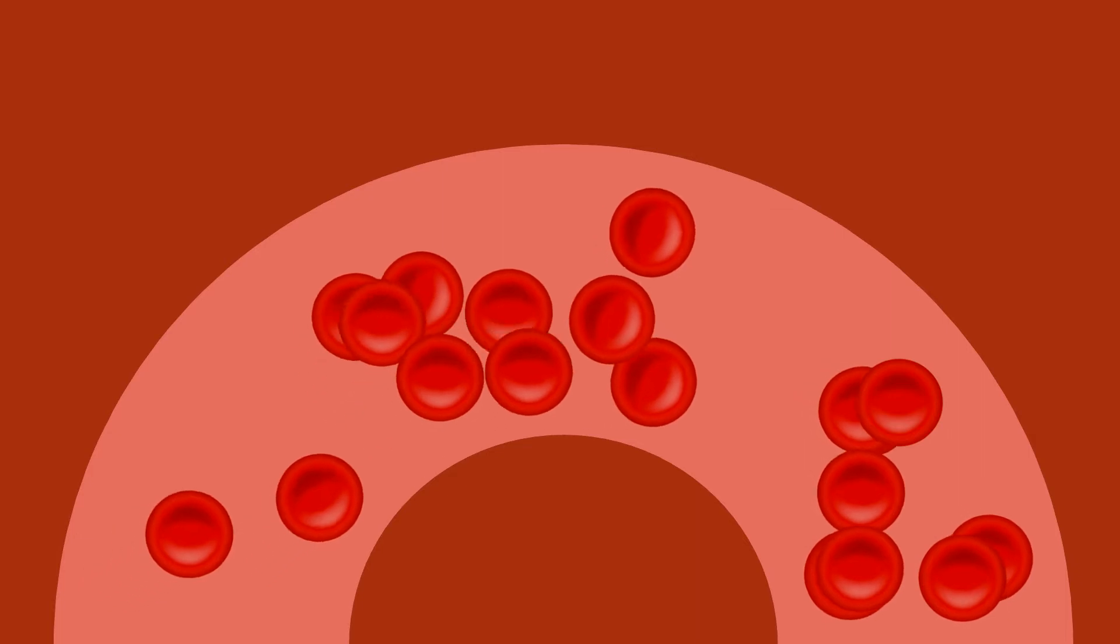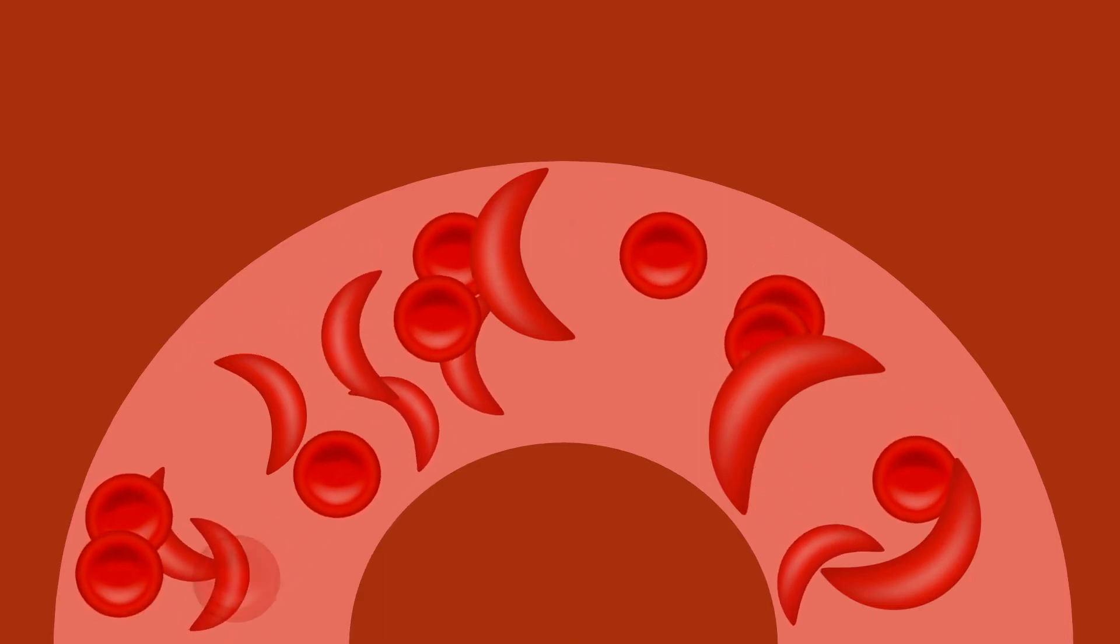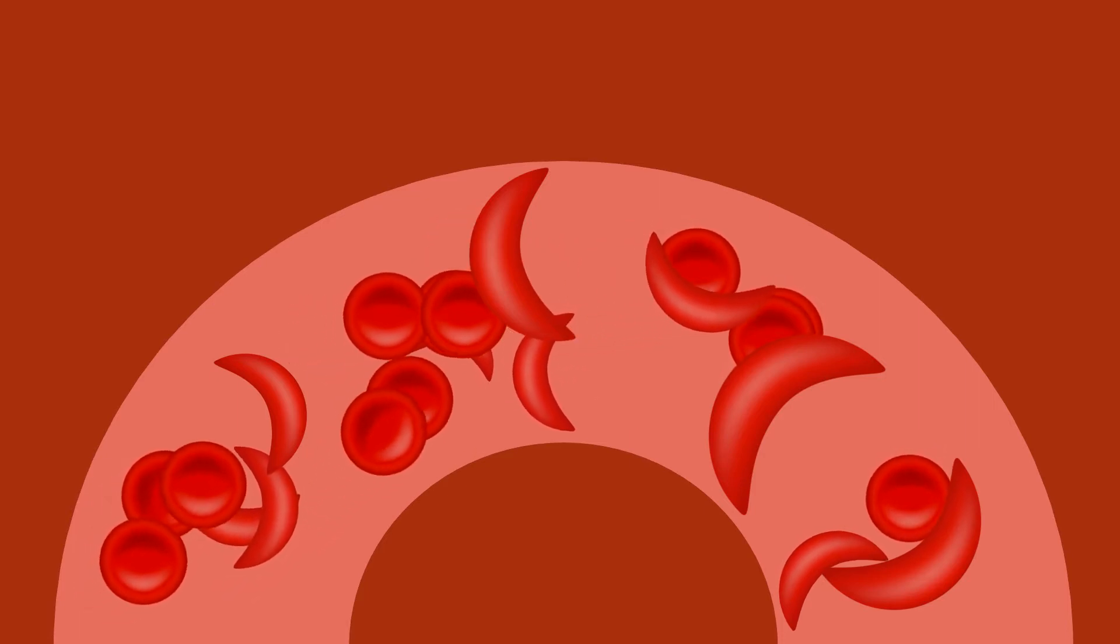But for people like Marcus who have sickle cell disease, their red blood cells are sticky and form a crescent moon shape. These sickled cells are not as good at carrying oxygen, plus they get stuck and clumped together like a traffic jam blocking the blood flow. The red blood cells cannot deliver oxygen throughout the body as they should.